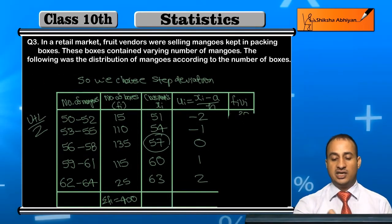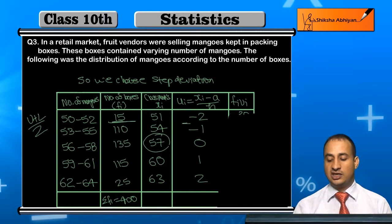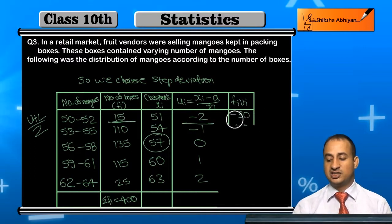With respect to f_i, we get values such as minus 2 and minus 10 for the first entries.